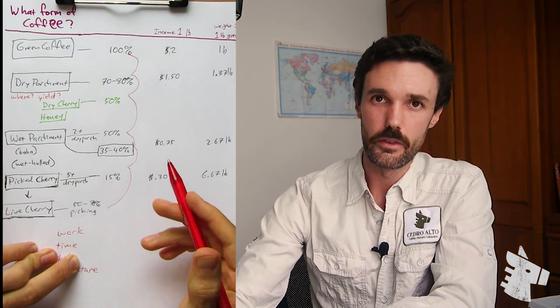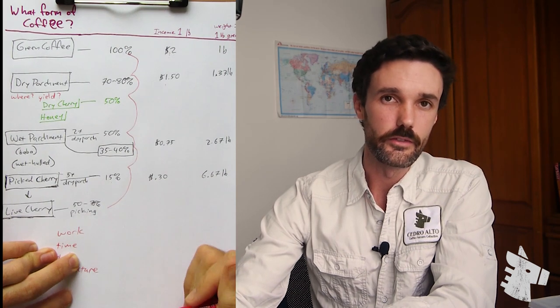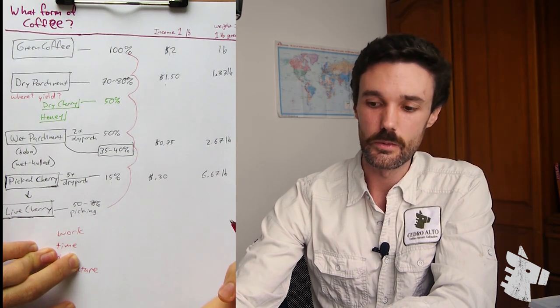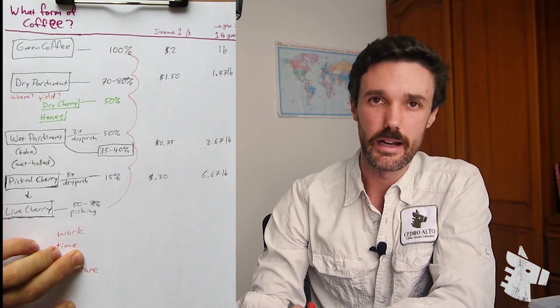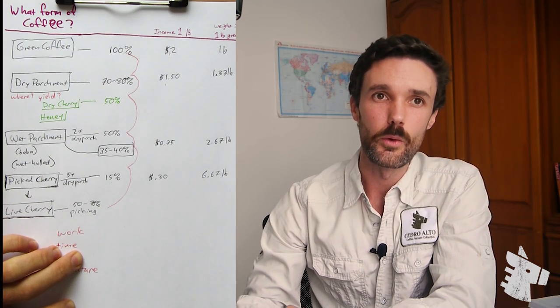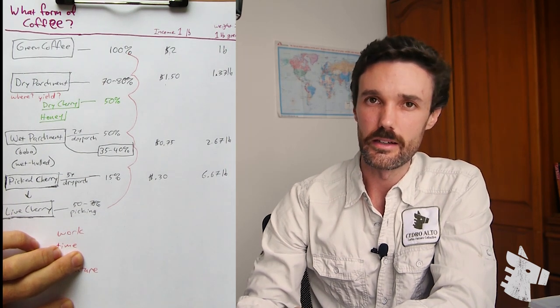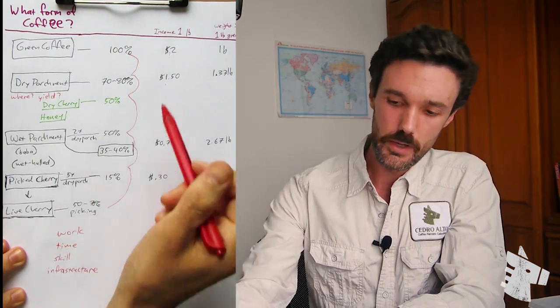So the way I've always handled this, the way Cedar Alto's transparency information is expressed, is always with the amount of currency that's actually being handed over to producers with context as to how we calculated that number in a way that the roaster market can interpret.